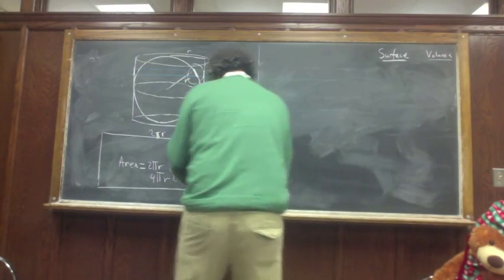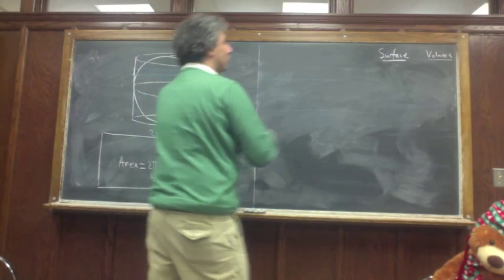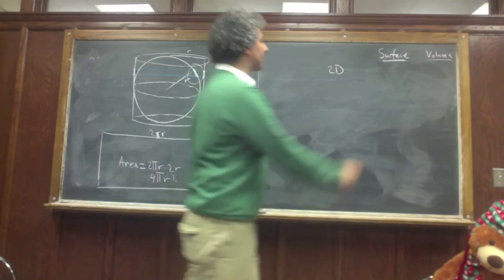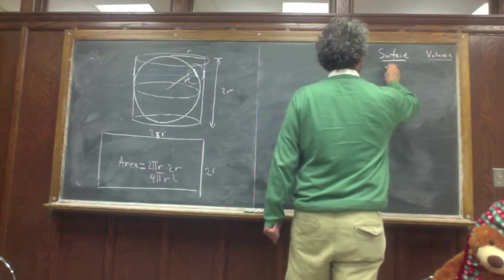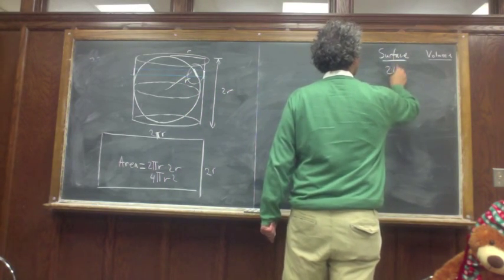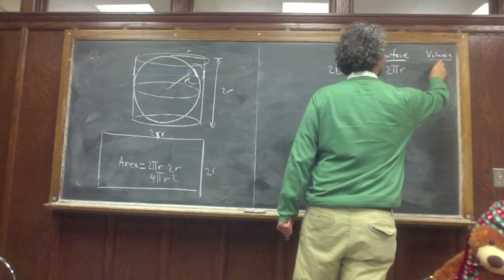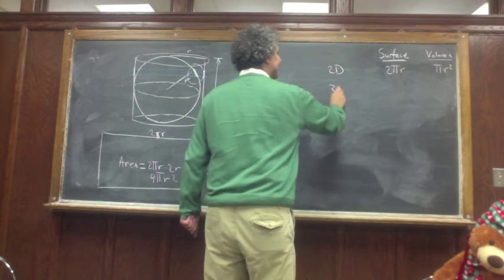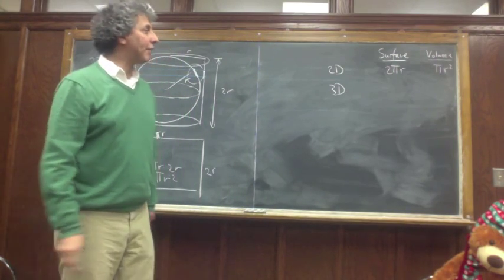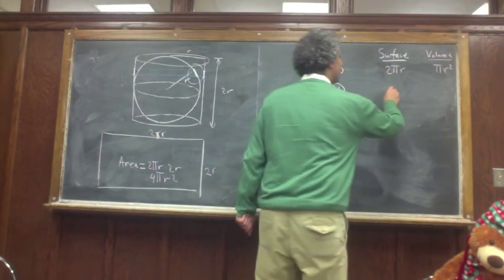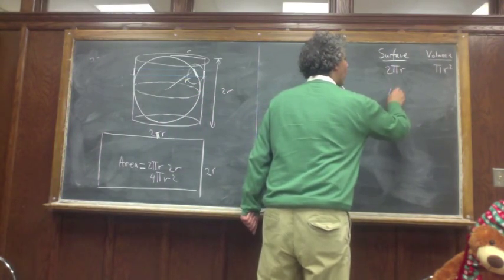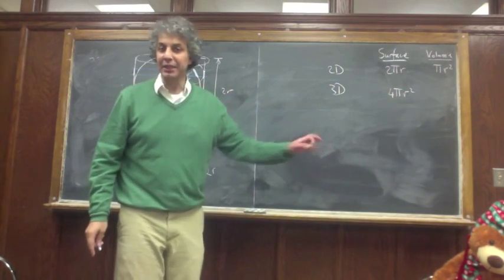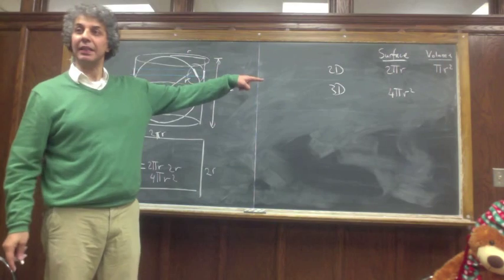I'm going to rewrite all these things. So in two dimensions, the surface was the perimeter, 2 pi r. Volume was pi r squared. In 3D, we have the surface which is 4 pi r squared — thanks to Archimedes. We know this.